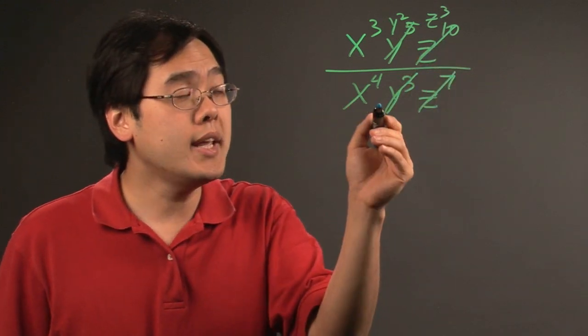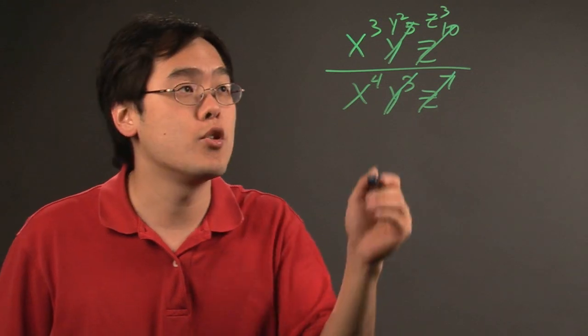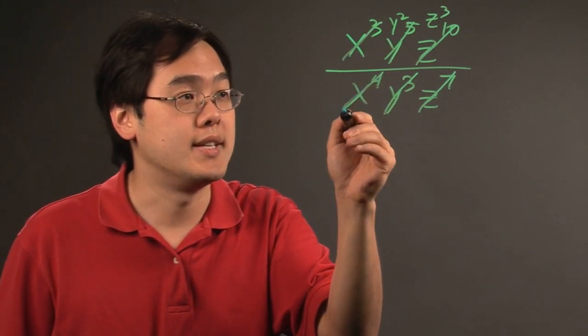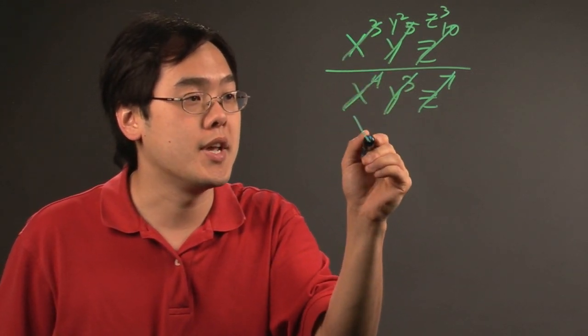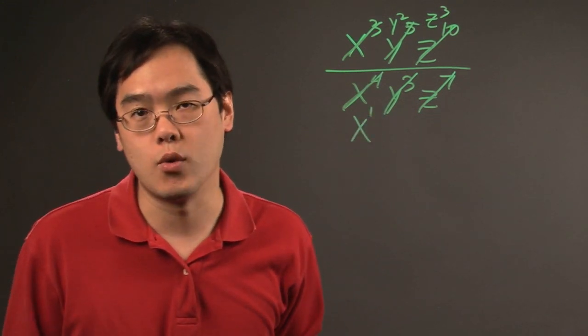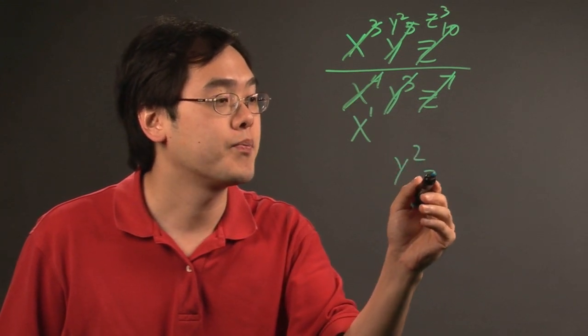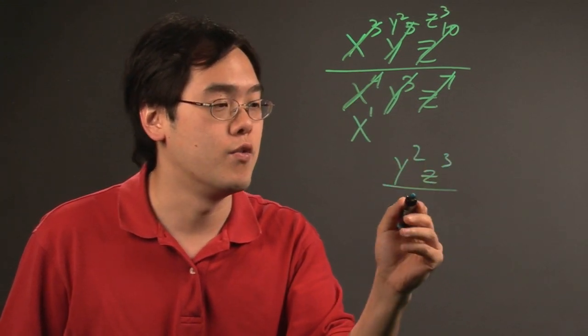Now, here, because the 4 is larger than the 3 and the 4 is at the bottom, you're pretty much canceling it down here, but the denominator exponent is going to remain, and it's going to be x to the 1, which you don't really normally write. So, the final simplification here is going to be y squared z to the third over x.